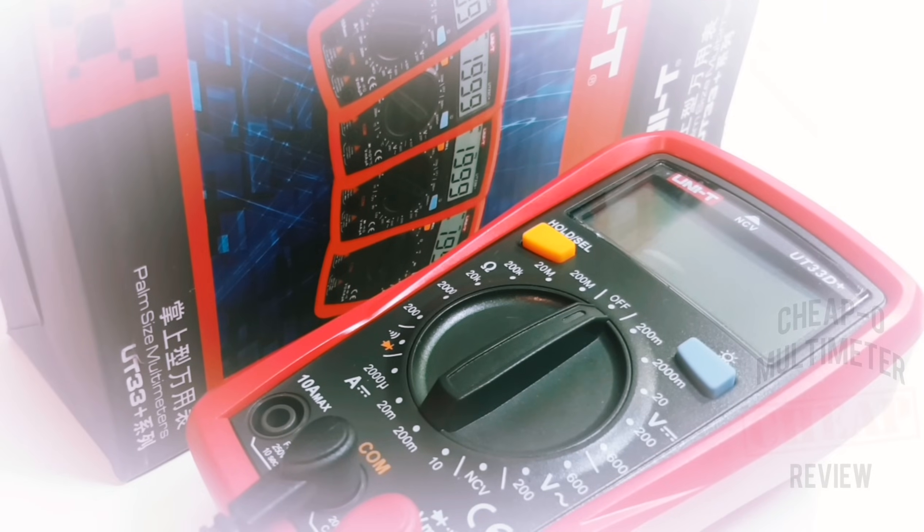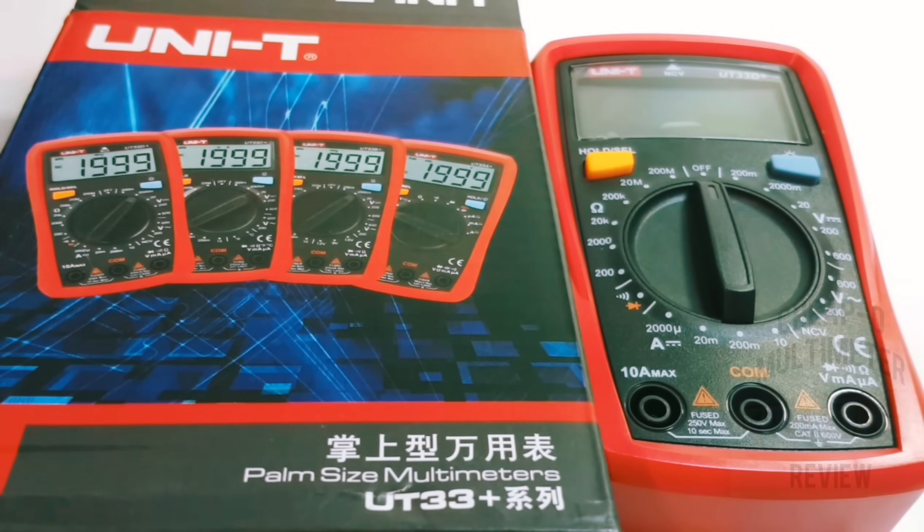Welcome back to another cheapo multimeter review. Yes, it is cheapo time. In the nation today, in the spotlight: UNI-T UT33D+ non-auto ranging 2,000 counts of goodness. Let's take a look. UT33D+ ships in your tried-and-true UNI-T box.